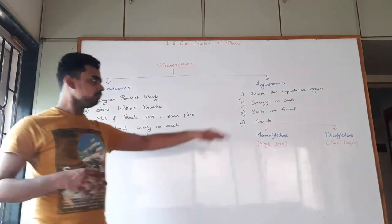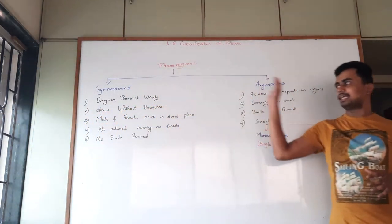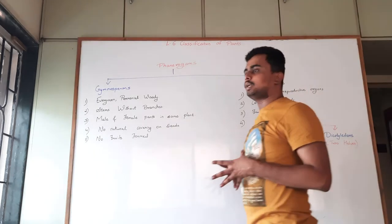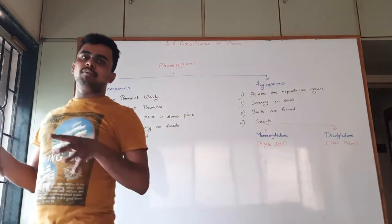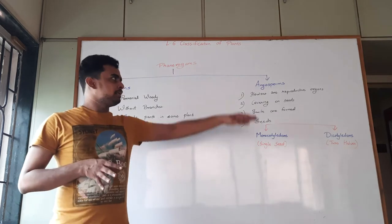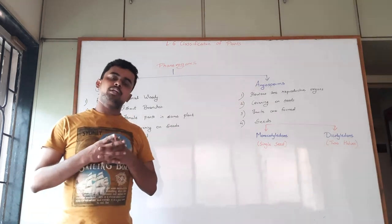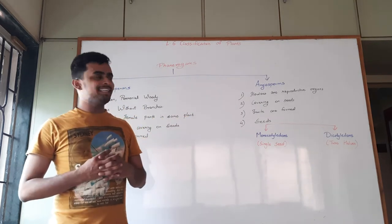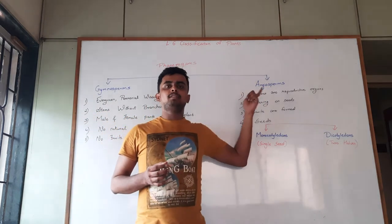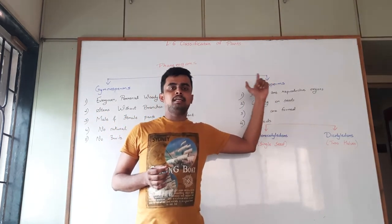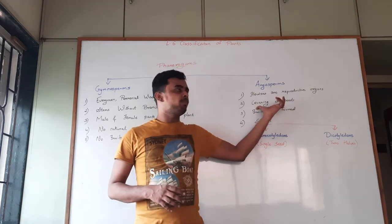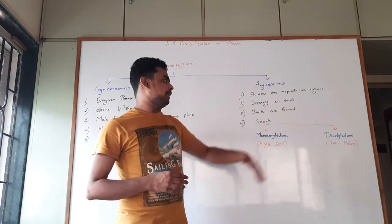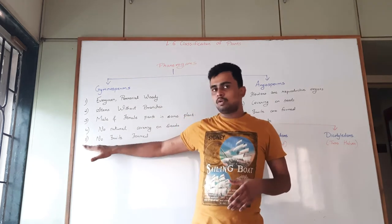Now we go to the second part of the classification: angiosperms. First, flowers are the reproductive organs — just as in gymnosperms both male and female parts are present, here flowers are the major reproductive organs of angiosperms. The word 'angio' means covered, and 'sperm' means seeds, so angiosperms have covered seeds, which is the next point of classification.